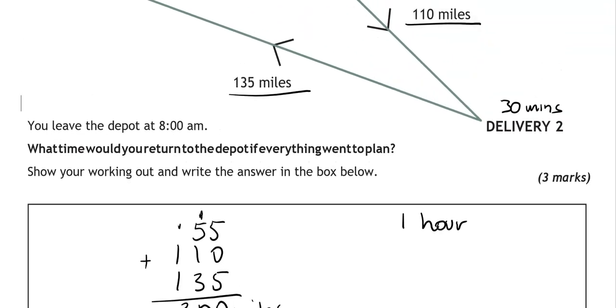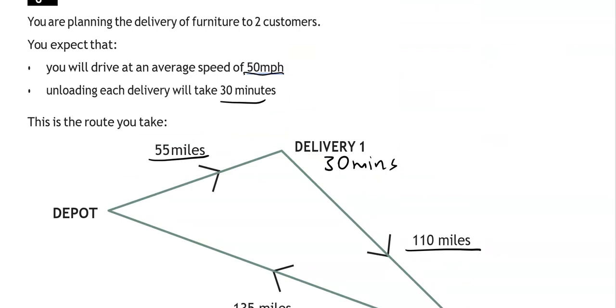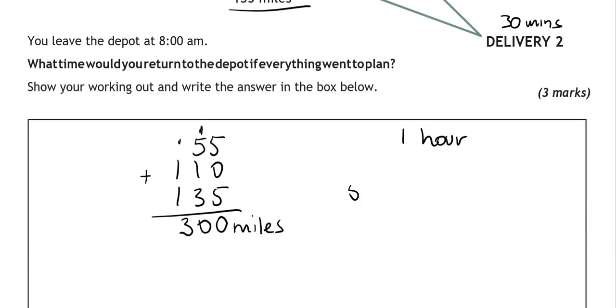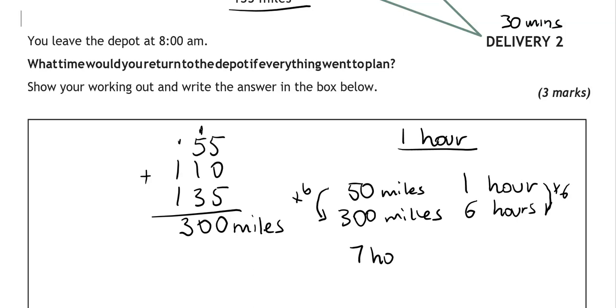Now we know that the speed, the average speed is 50 miles per hour. So 50 miles per hour. What about 300 miles? How many hours will that take? To get from 50 to 300 we multiply by 6. So you could put 300 divided by 6 to give us 50 if you want. So we are going to do the same thing on the other side. So 1 times 6 gives us 6 hours. So 6 hours that is for the driving. And we also have 1 hour for the actual delivery. So that is 7 hours in total.